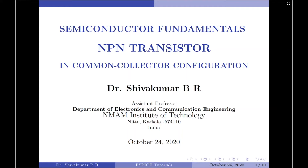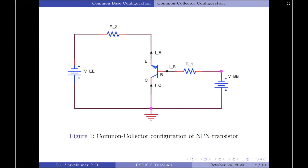Welcome to semiconductor fundamentals. In this session I will be discussing the common collector configuration of the NPN transistor. We have two supply signals — one across the base and another across the emitter. The collector is the common terminal here. The output is taken from the load resistance R2, and R1 is the input resistance. In the common collector configuration, the collector is connected to ground through the supply, making it common to both input and output.